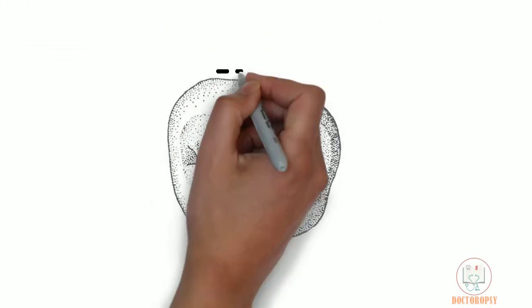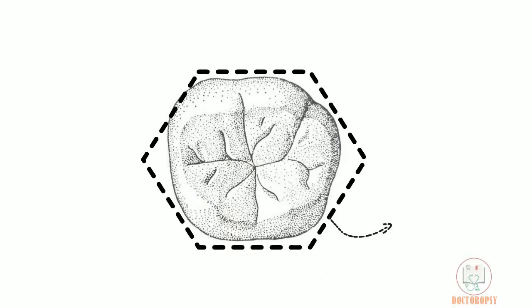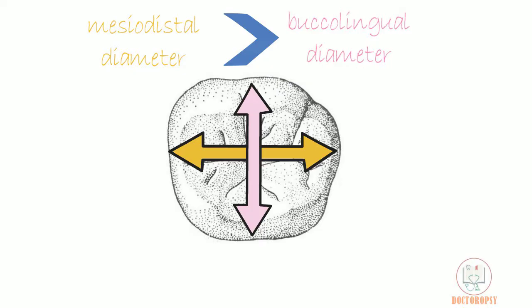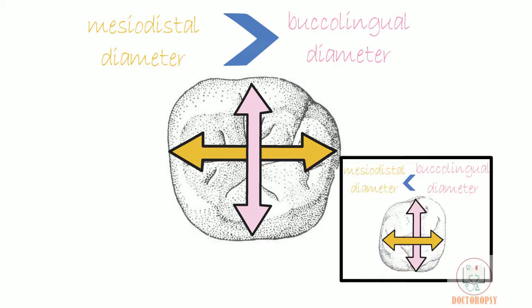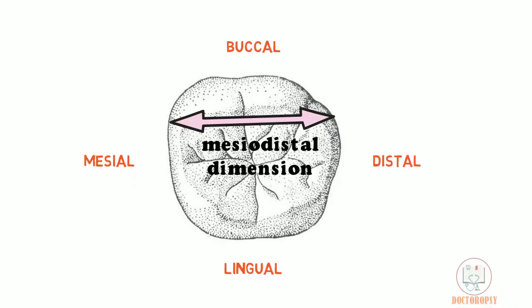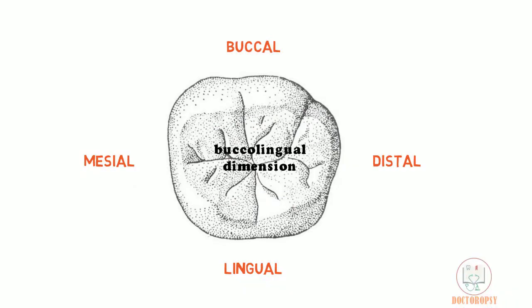In the mandibular first molar, the outline form of the crown from the occlusal aspect is hexagonal. Its mesodistal dimension is more than the buccal-lingual dimension, which is opposite to that in the maxillary first molar. The mesodistal dimension is more in the buccal half than the lingual half, and the buccal-lingual dimension is more in the mesial half than the distal half.